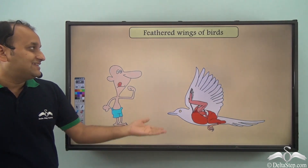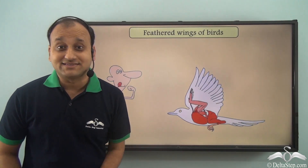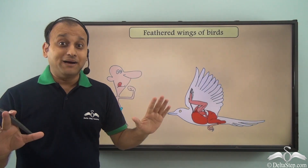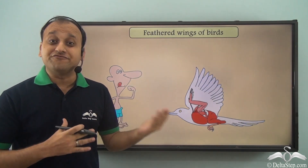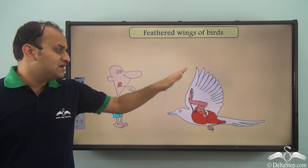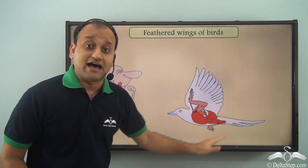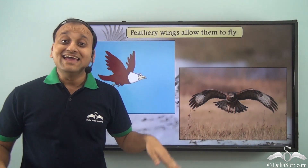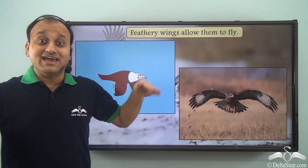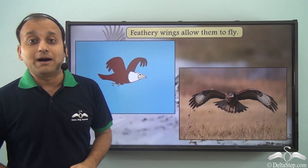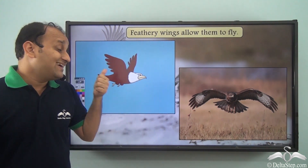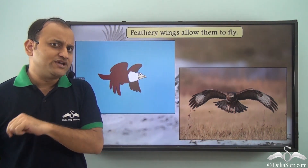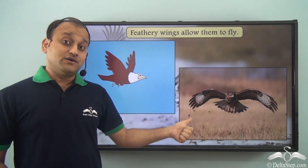The reason is that birds have feathered wings. We may have two limbs, but these two limbs are not feathered, and that is a major advantage which birds have. Because of their feathered wings, they can easily push against the air and rise up, and that is a major advantage for the birds which we do not have.